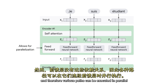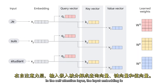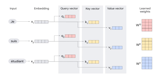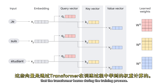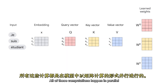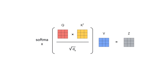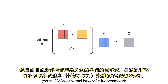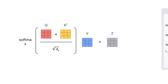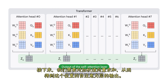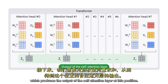However, the feed-forward layer does not have these dependencies, and therefore various paths can be executed in parallel while they flow through the feed-forward layer. In the self-attention layer, the input embedding is broken up into query, key, and value vectors. These vectors are computed using weights that the transformer learns during the training process. All of these computations happen in parallel in the model in the form of matrix computations. Once we have the query, key, and value vectors, the next step is to multiply each value vector by the softmax score in preparation to sum them up. The intuition here is to keep intact the values of the words you want to focus on and leave out irrelevant words by multiplying them by tiny numbers like 0.001, for example. Next, we sum up the weighted value vectors, which produces the output of the self-attention layer at this position for the first word.